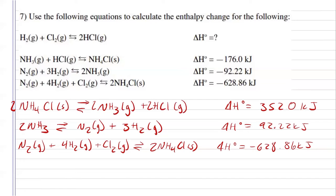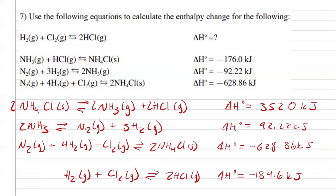Adding everything that we have so far, I get the reaction that I need, and adding my enthalpies will give me a reaction enthalpy of negative 184.6 kilojoules.